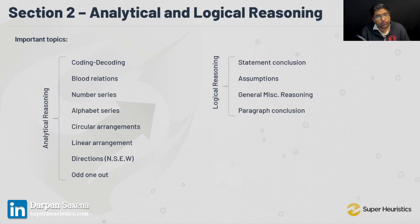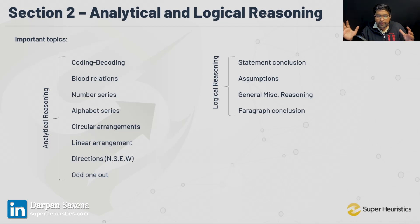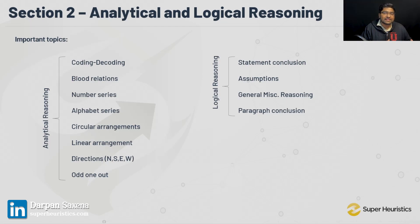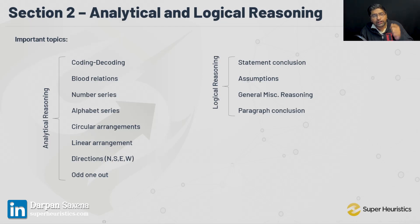Let me go to Section 2: Analytical Reasoning and Logical Reasoning. The kind of questions here are never seen in CAT — you might have seen many in NMAT but not in CAT. So if you're an NMAT aspirant, you know the drill. You know what coding-decoding is, what blood relations is, what number and alphabet series are. This is something different in SNAP, but again, allow me to say this: these are simple, these are not hard.